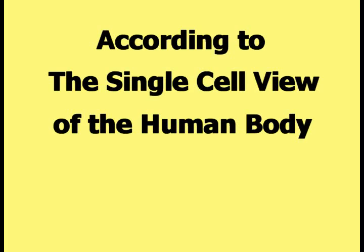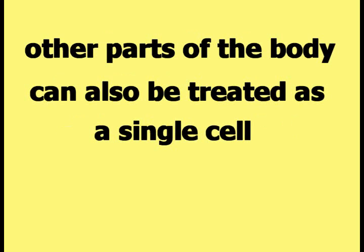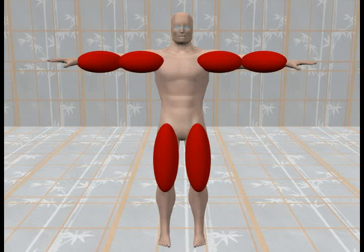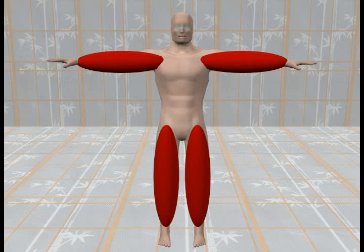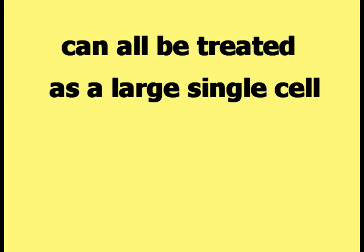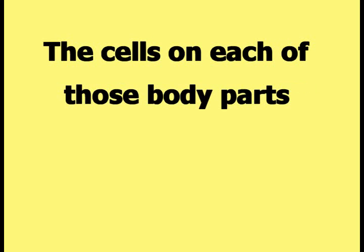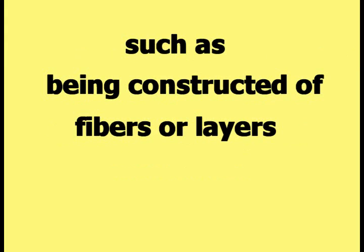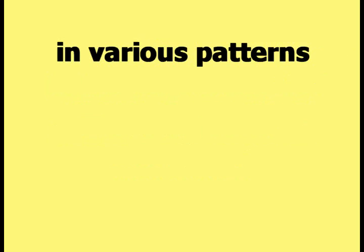According to the single cell view of the human body, other parts of the body can also be treated as a single cell. The upper arms, the lower arms, the upper legs, the lower legs, the entire arm, and the entire leg can all be treated as a large single cell. The cells on each of those body parts would also be constructed in one of the ways previously mentioned, such as being constructed of fibers or layers in various patterns.